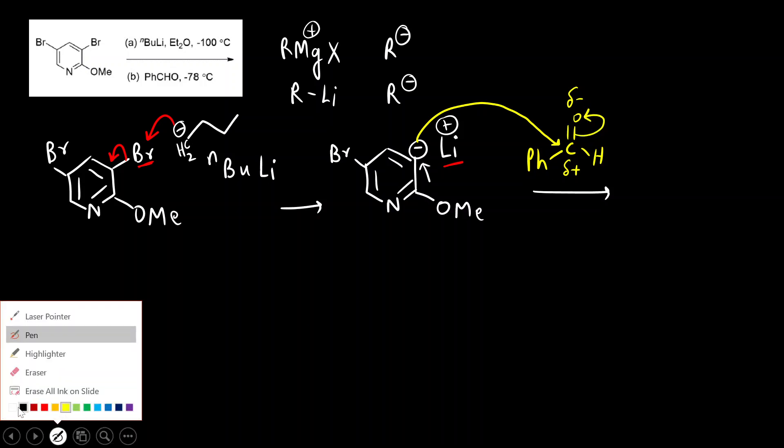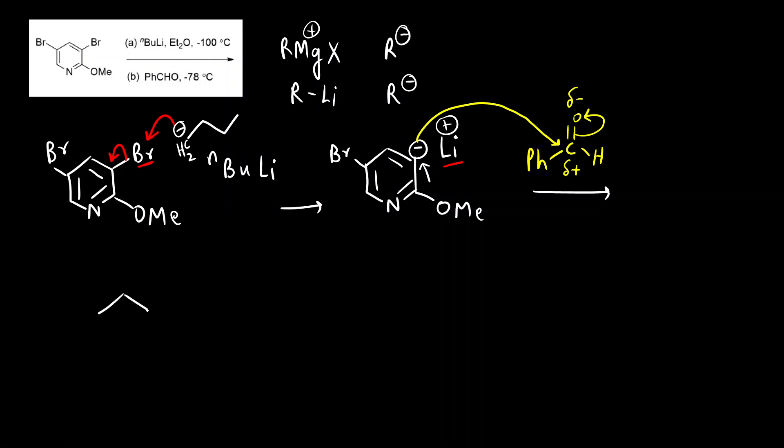The carbonyl group will open up and what we get is pyridine, this Br remains as it is, here we have O-methyl group, and then here we have carbon. This will form O minus - it will pick up a proton and become OH after workup. Then we have Ph and we have hydrogen. So this is going to be the final product.